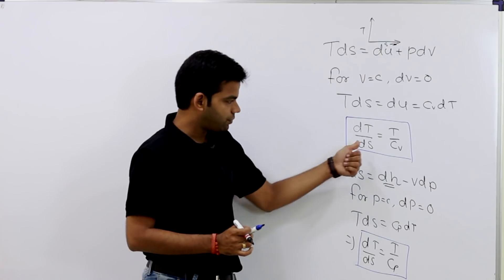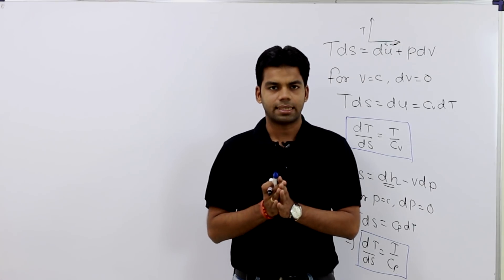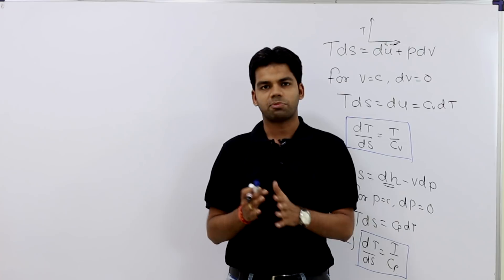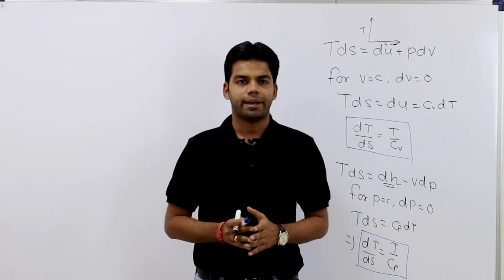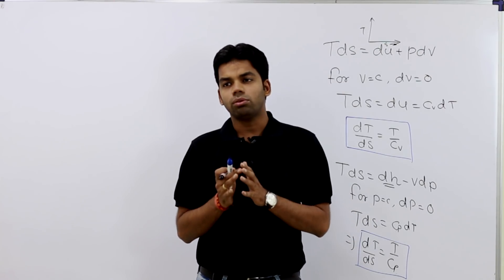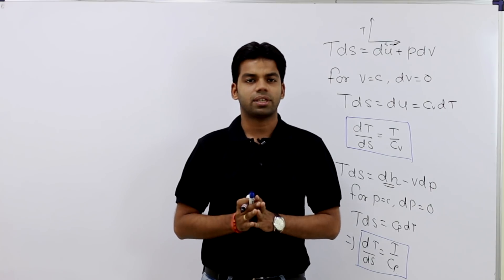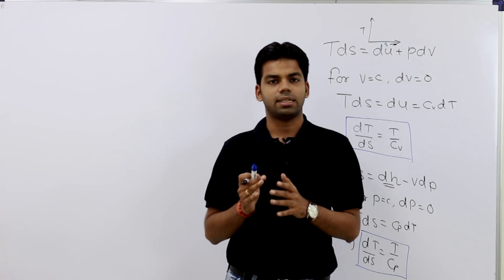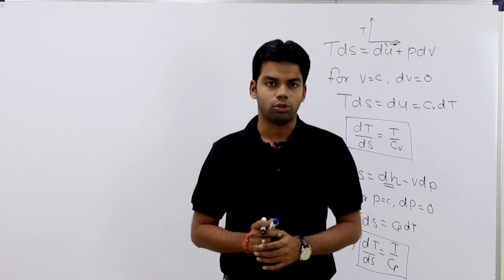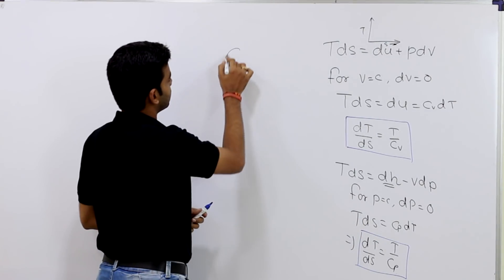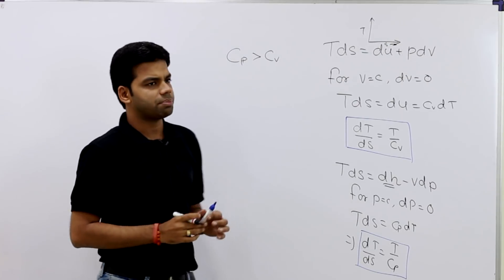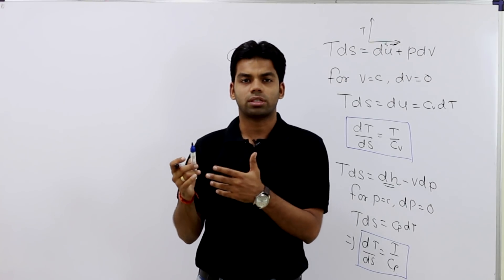From these expressions, you can conclude which slope is greater. Cp and Cv are specific heats at constant pressure and constant volume respectively. For any gas, the specific heat at constant pressure is always greater than the specific heat at constant volume — Cp is always greater than Cv.